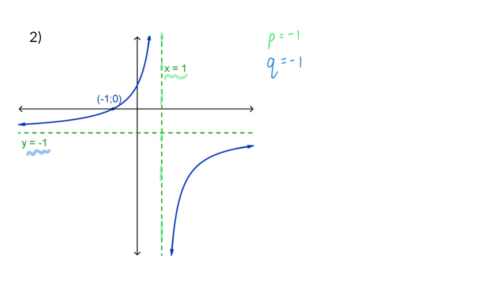So, in our equation, we now have y is equal to a over x minus 1, minus 1, and we need to calculate the a value.